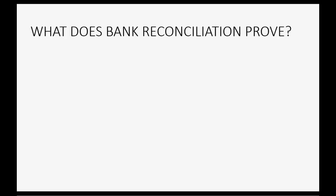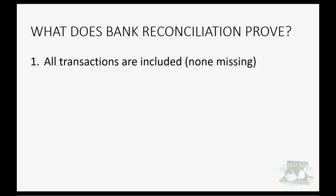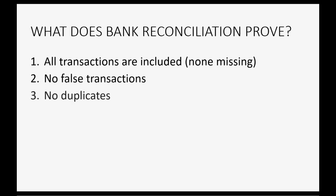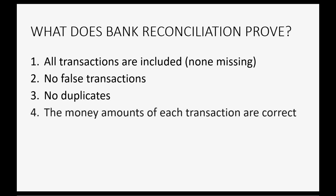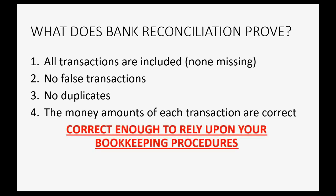No, it does not. So what does bank reconciliation prove? At minimum, it proves that all transactions are included and that we did not miss a transaction that we should have recorded into QuickBooks Online. It also proves there are no false transactions and no duplicates — nothing included in QuickBooks Online that should not be there. And it proves that the money amounts of each transaction are correct. So if the money amounts are correct and those other conditions are true, we can assert that our QuickBooks Online records are correct enough to be relied upon if we are audited by an outside organization like the IRS or a bank under the conditions of a loan.